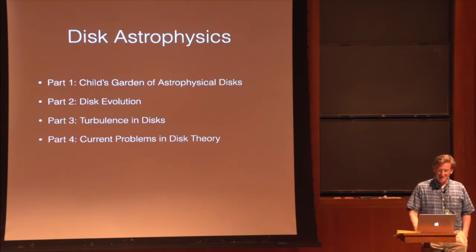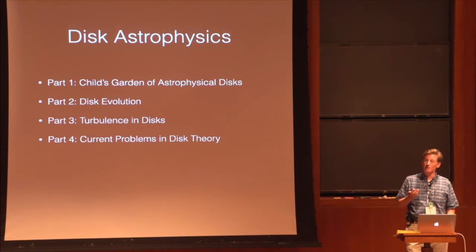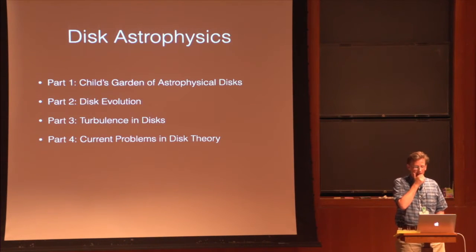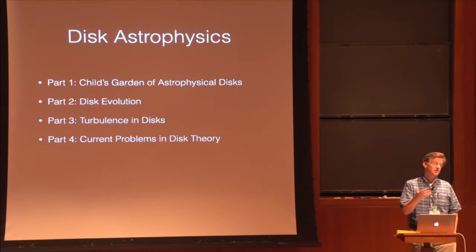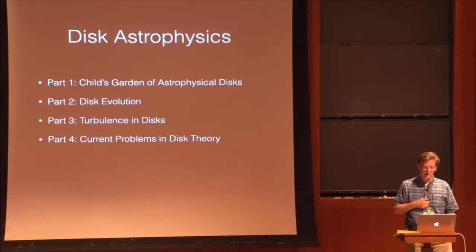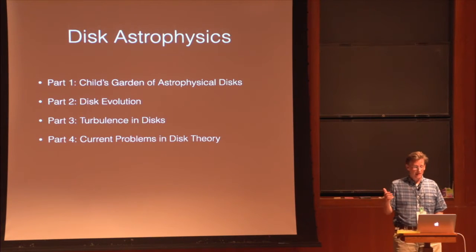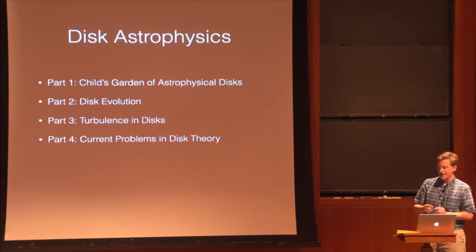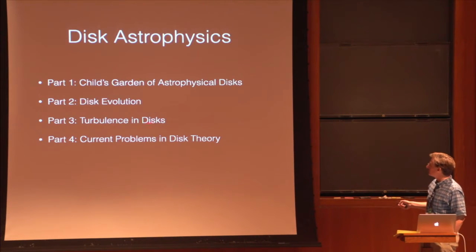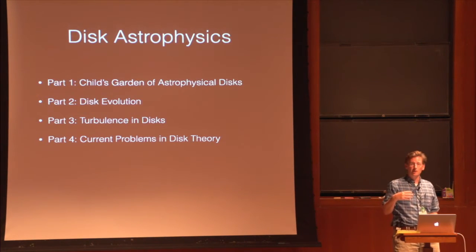The assignment is disk astrophysics. Here's the plan: I'm going to start out with some phenomenological motivation and go through a list of interesting disk systems. Then I'll talk about disk evolution, which is all about evolution of angular momentum. I've been told I have to talk about the magnetorotational instability and turbulence in disks. And if there's time at the end, I'll give a brief discussion of current problems in accretion disk theory.